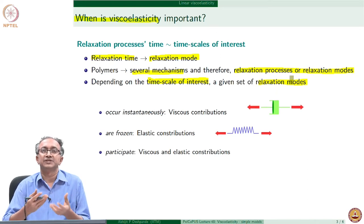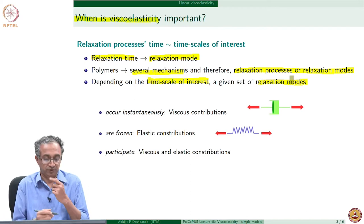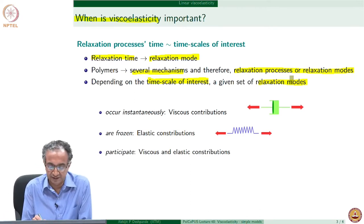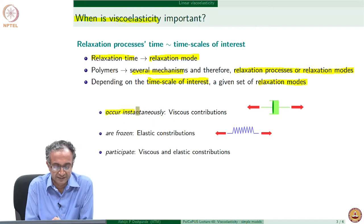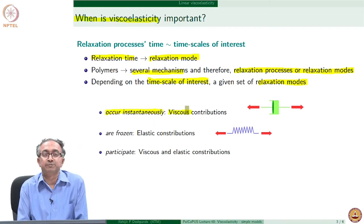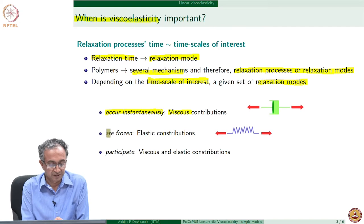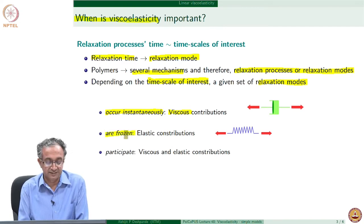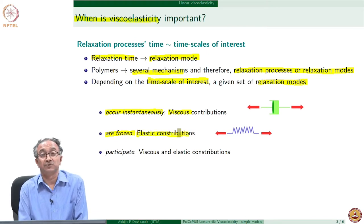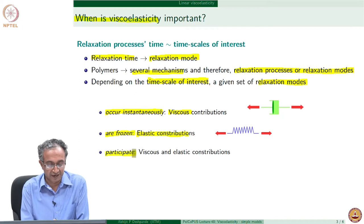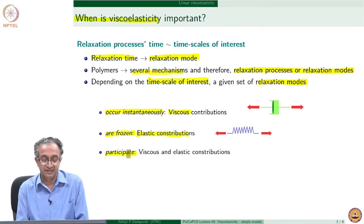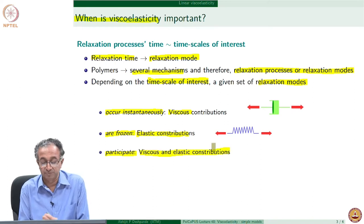For a viscoelastic material, we will have combinations of viscous or elastic storage depending on the time scale of interest. For example, if there are some modes which are very fast, we will only get viscous contributions from them in a macromolecule — if the side group rotation is very fast, we get pretty much a viscous response. But at temperatures in the glassy state where many modes are frozen, we get more dominant elastic contributions. At intermediate time scales, both viscous and elastic contributions are present.